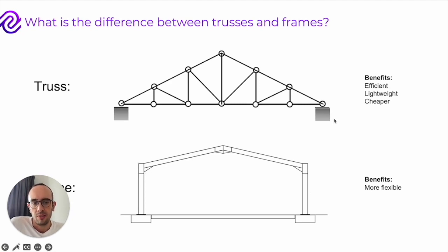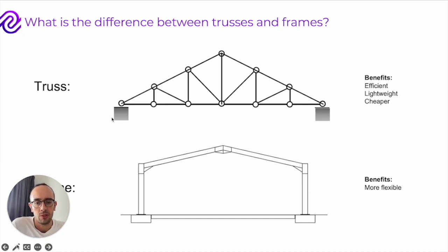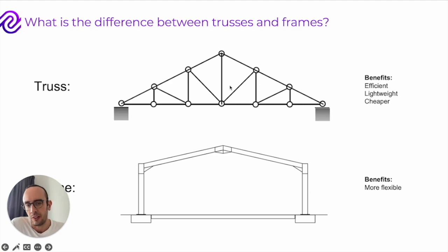What this means is that trusses can be quite efficient, lightweight, and often cheaper than frames because they transfer the loads more efficiently down into the supports. Frames on the other hand are much more flexible — you don't need to build in these triangular patterns that you commonly see with trusses.